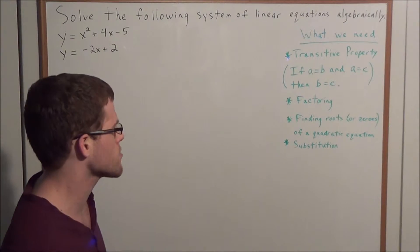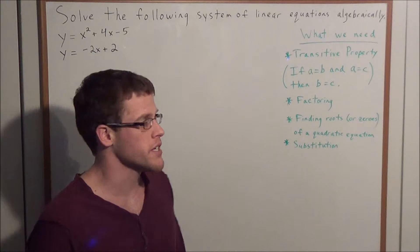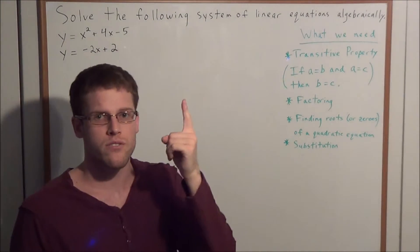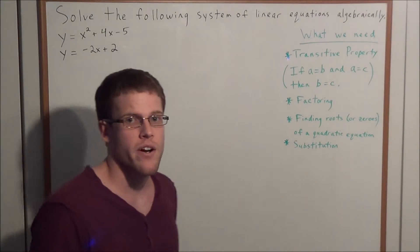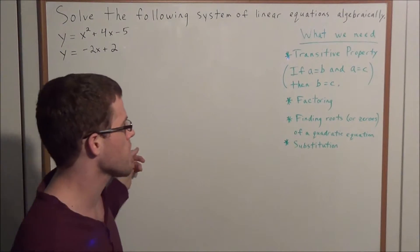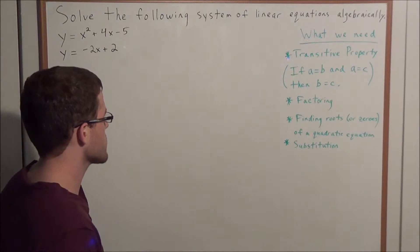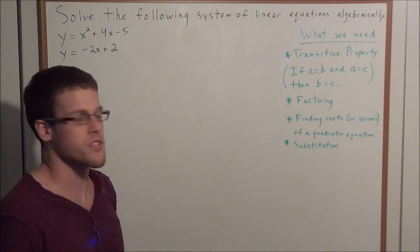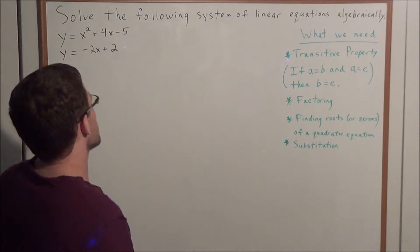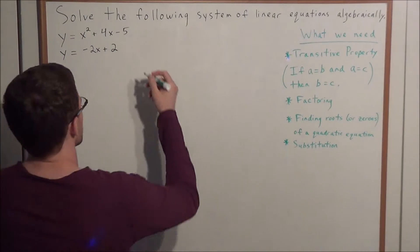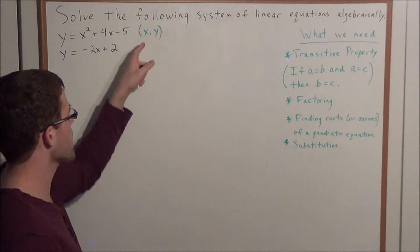Before we begin, let's look at what we're going to need to solve this problem. We need the transitive property of equality, which basically states if a equals b and a equals c, then b equals c. We'll apply this to reduce the system down to one equation to solve for a variable. Next, we need to factor a quadratic equation into two binomials and find the roots or zeros. Finally, once we have the pair of points, we substitute them into either equation to verify they satisfy both, and our solutions will be in the form x comma y.